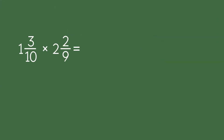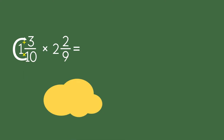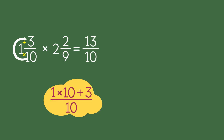Let's try another example: 1 and 3 tenths times 2 and 2 over 9. Let's use the C method to convert the first mixed number into an improper fraction. We multiply the denominator by the whole number and then add it to the numerator. So the numerator is 1 times 10 plus 3, and the denominator stays the same. So the improper fraction is 13 over 10.